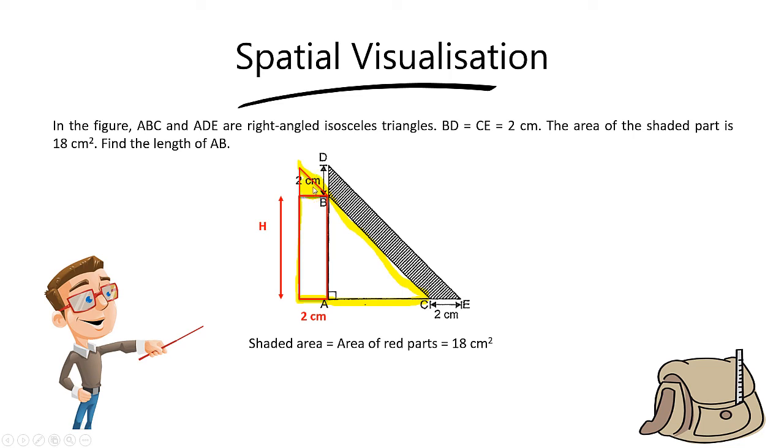The area of the top triangle is half times base times height. The base is 2 and the height is also 2, so half times 2 times 2 equals 2cm². Therefore, to find the area of the rectangle, take 18 minus 2 to get 16cm².